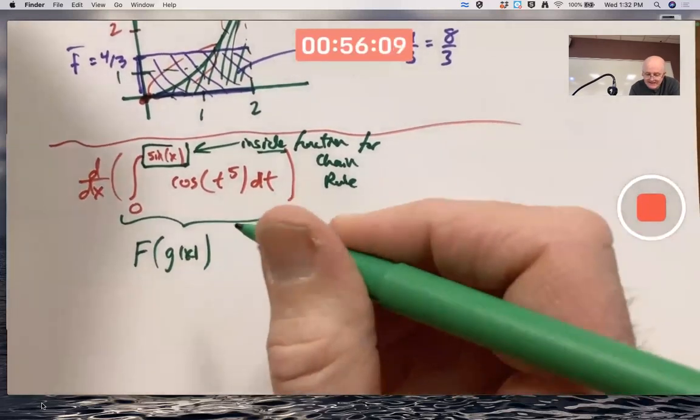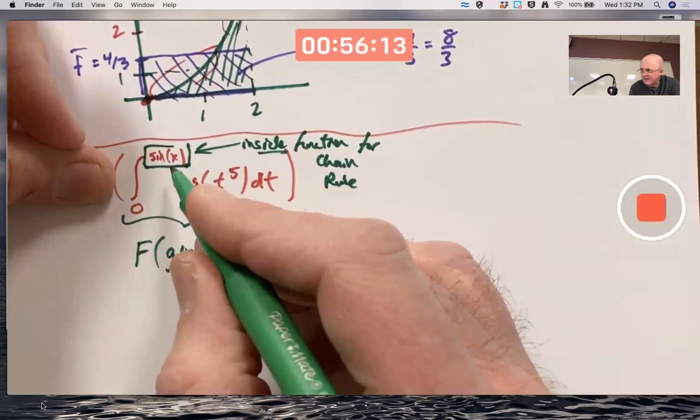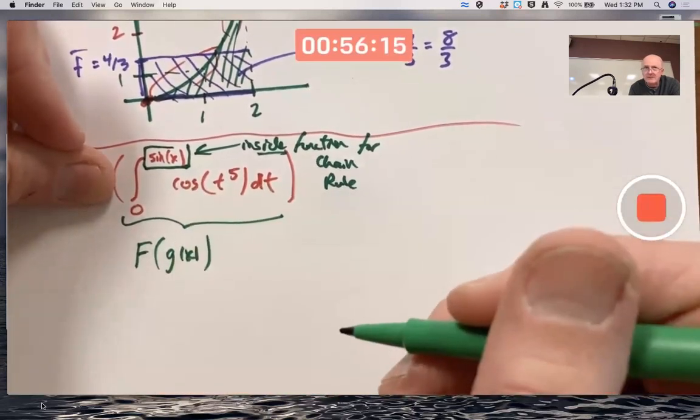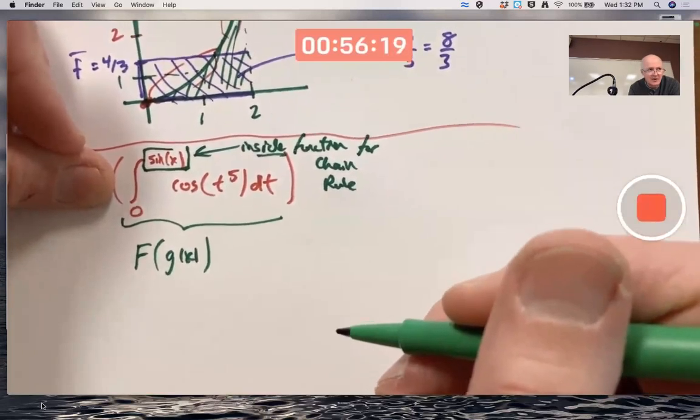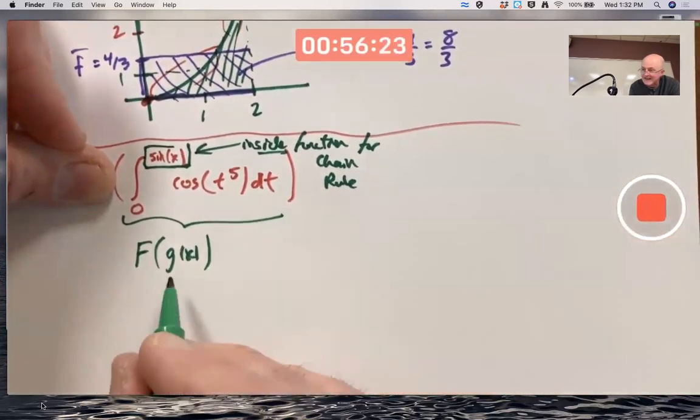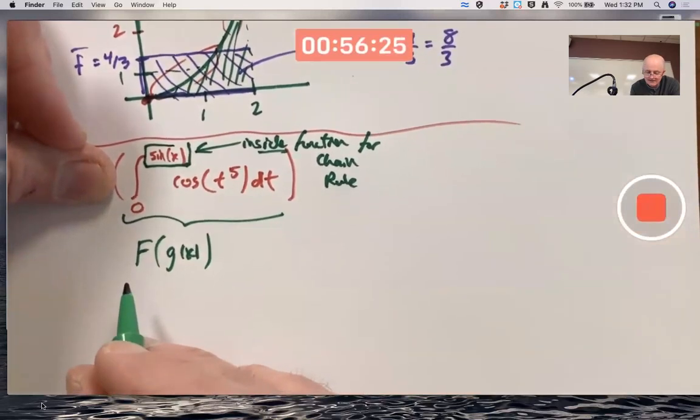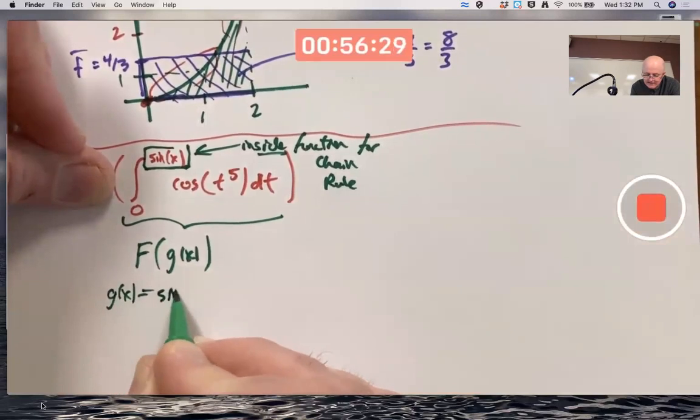When you plug a number in for x into this function, you have to evaluate its sine first before you could try to approximate the integral. Sine gets done first. That's always what the inside function is, is what gets done first, because you work from inside to outside. The g of x here has to be the sine function. Sine of x.